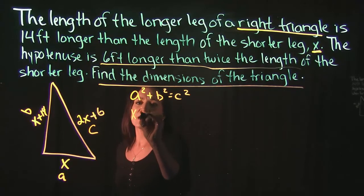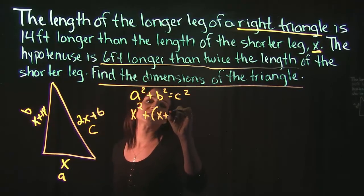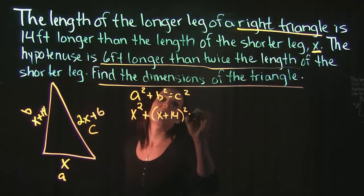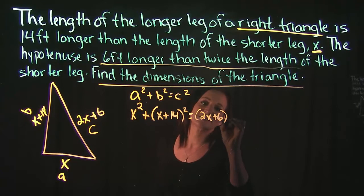Alright so I'm going to say that a is x, so that means we have x squared plus b squared where b is x plus 14, is equal to c squared, so that's 2x plus 6.